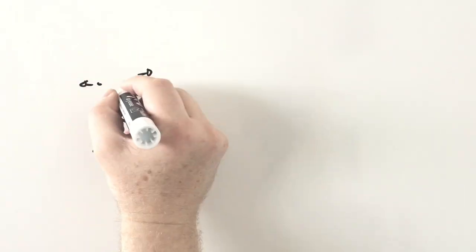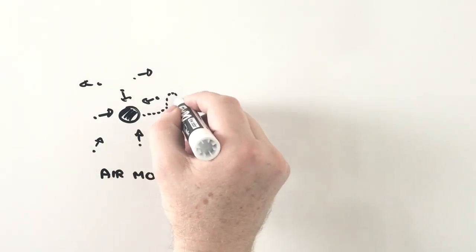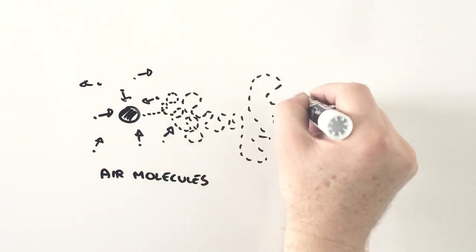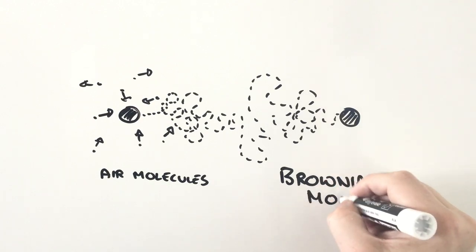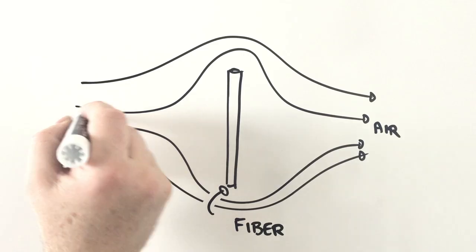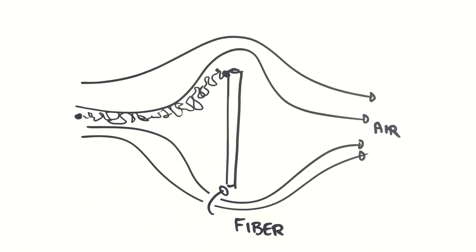Because these particles are so small, they have very little inertia and dance around as they're bombarded by air molecules. This unusual behavior is called Brownian motion after the first person to observe it. As they dance, they end up colliding with the filter and being captured.